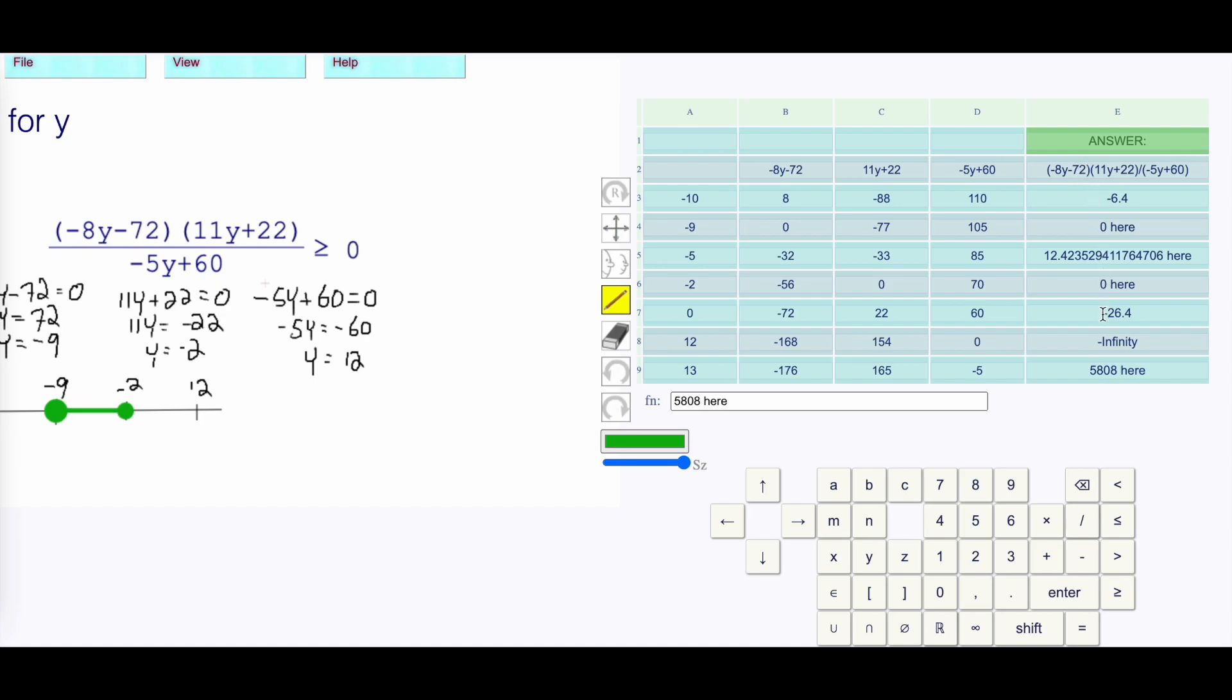Then nothing else is included until we get beyond the 12. Put a hollow dot on the 12. We are shading this way.